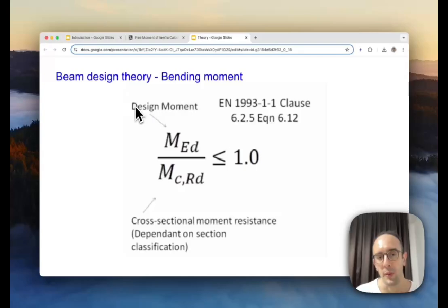So once you've actually decided on the classification the actual check itself isn't very complicated. You're taking the design moments this is the force that you're applying and calculating that as a bending moment and then dividing that by the resistance which we are about to show you how to calculate. And this depends on the section classification and then you're making sure that this is under one so you're making sure that this is under 100% utilization.